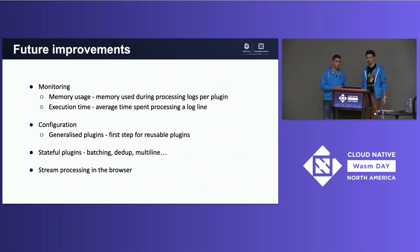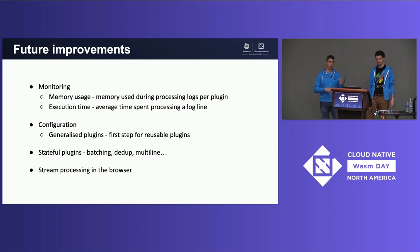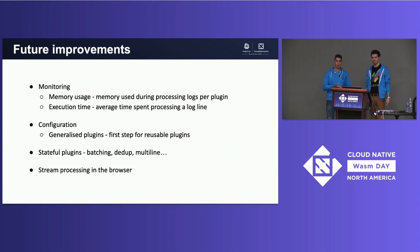Our future plans include implementing the backend system, adding monitoring information like memory usage and execution time to plugins so you can properly measure what input gives you the best output, and adding configuration support so you can build a production-grade system with a Wasm plugin marketplace with configurable plugins. Creating stateful plugins is a bit harder — for example, batching, deduplication, and handling multi-line logs require state in Wasm. And the lowest-hanging fruit is stream processing in the browser: automatically grabbing the latest logs and applying the transformation pipeline.